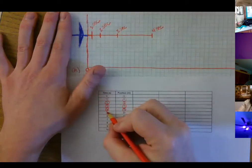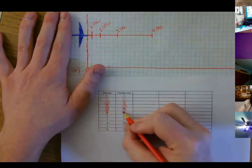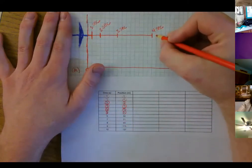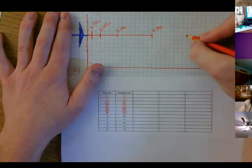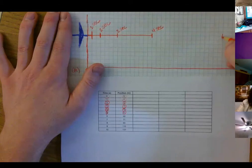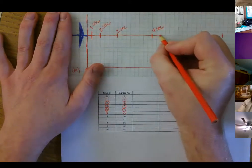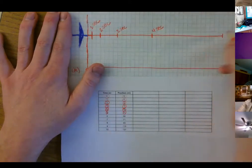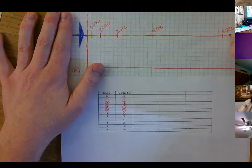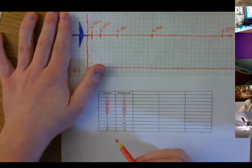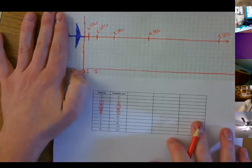Then one more second passed and it was at 31 meters — sixteen, seventeen, eighteen, nineteen, twenty, twenty-one, twenty-two, twenty-three, twenty-four, twenty-five, twenty-six, twenty-seven, twenty-eight, twenty-nine, thirty, thirty-one. It was all the way over here — this is at five seconds. Then etc., it kept going for the rest of this data, the last five seconds of the test flight.